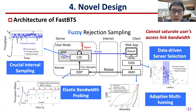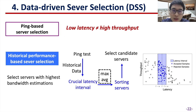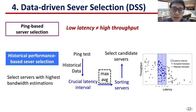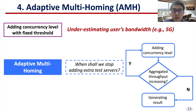However, in some cases like 5G network, using only one test server cannot saturate users' access link bandwidth. Therefore, we propose data-driven server selection and adaptive multi-homing to handle these cases. Most of today's BTSs choose servers with the lowest latencies to the client. However, we discover that low latency does not necessarily indicate high throughput. Therefore, we devise data-driven server selection that selects test servers with the highest bandwidth estimation based on their historical performance. Adaptive multi-homing is used for adjusting concurrency level when current servers cannot saturate the access link bandwidth. Instead of using a fixed threshold, we adaptively add concurrency level if the newly added server can increase the aggregate throughput.